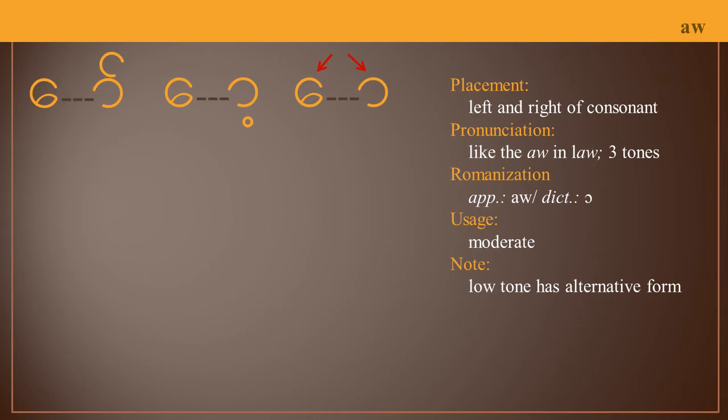However, when combined together they create a new sound. You've already seen an example in a previous lesson and you're going to see it repeated often in some of our vowel lessons. The placement is to the left and right of the consonant. The consonant will always be surrounded by these two symbols.